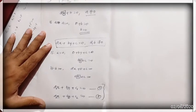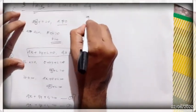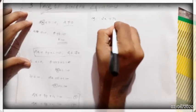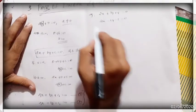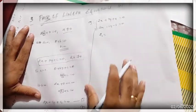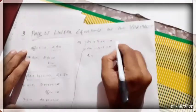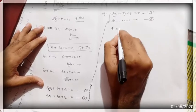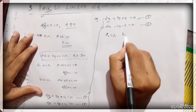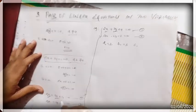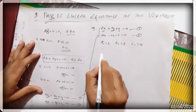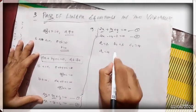Let's look at some examples. Example 1: 2x + 3y + 4 = 0 and 4x − 2y − 3 = 0. Comparing these two equations with the general form, a₁ is the coefficient of x in the first equation, so a₁ = 2. b₁ is the coefficient of y, so b₁ = 3. c₁ is the constant term, so c₁ = 4.